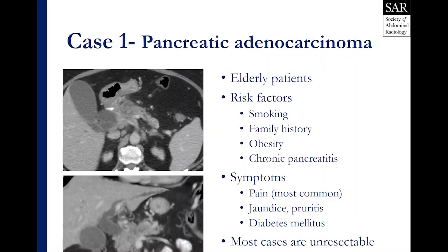Most cases of pancreatic ductal adenocarcinoma are unresectable at the time of initial discovery and diagnosis, mostly because of two things: either the lesion has become locally advanced, meaning the surrounding vasculature in the upper abdomen is too involved with the tumor and so it's unable to be resected, or there is also a presence of distal metastases.